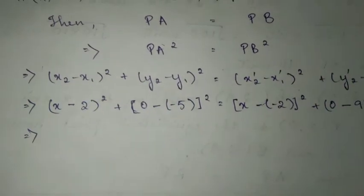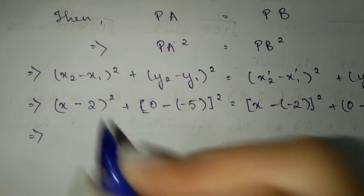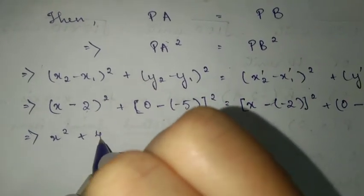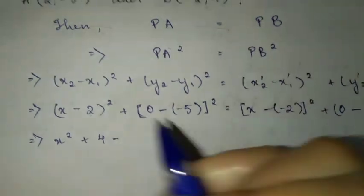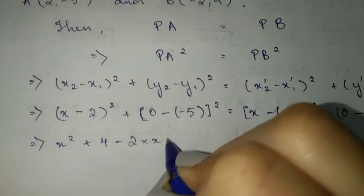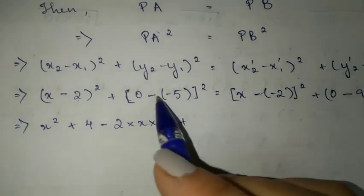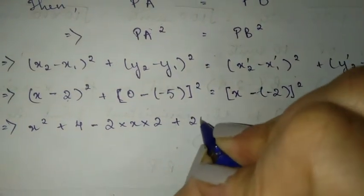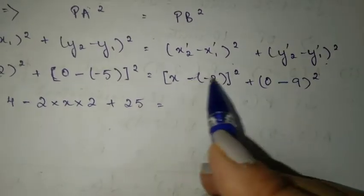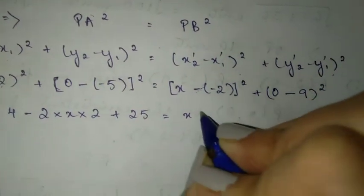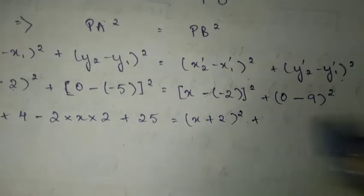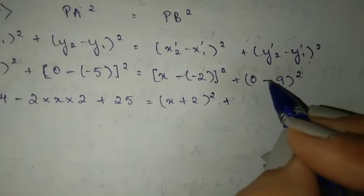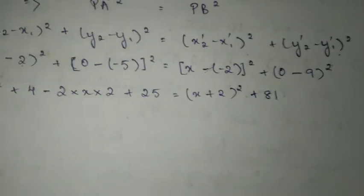Let's substitute: we have (x - (-2)) which is (x + 2) whole square. Again you will have (0 - 9) whole square. Next, (x - 2) whole square, using a minus b whole square formula: a square plus b square minus 2ab.